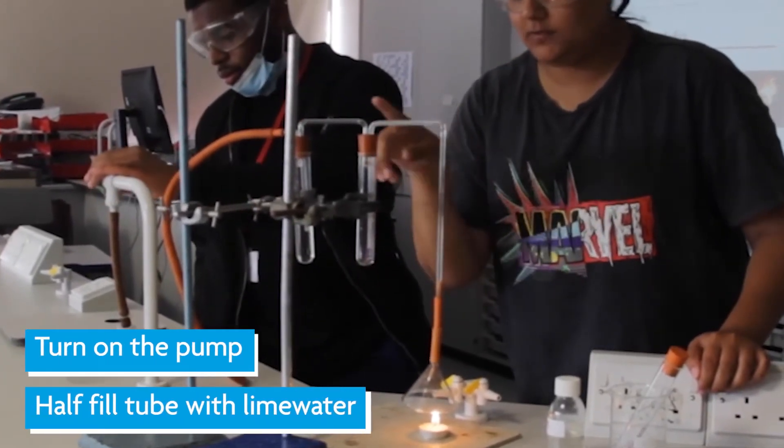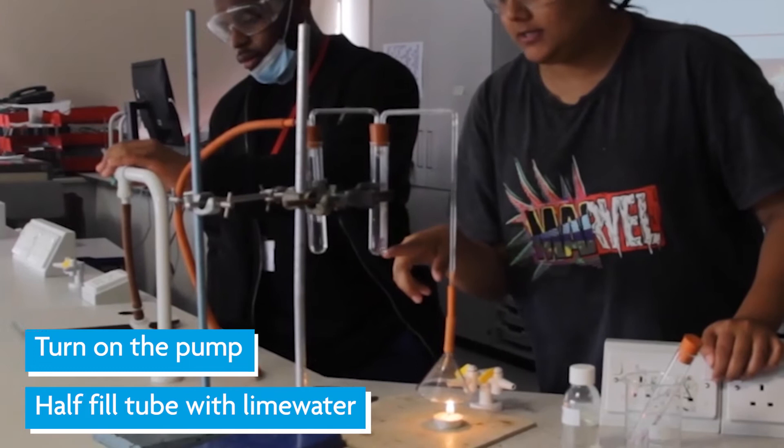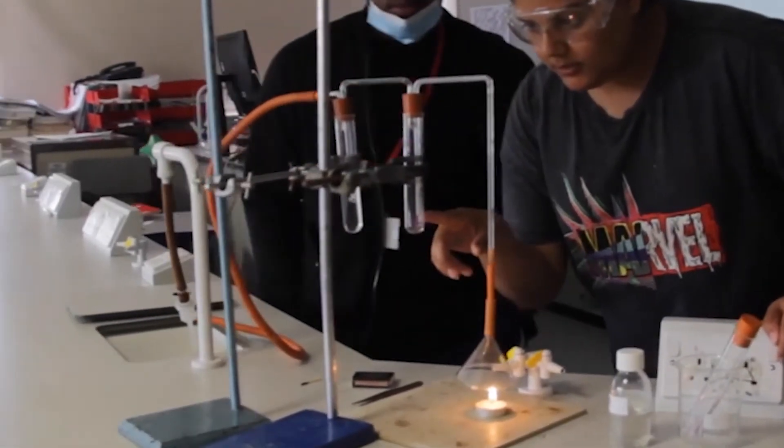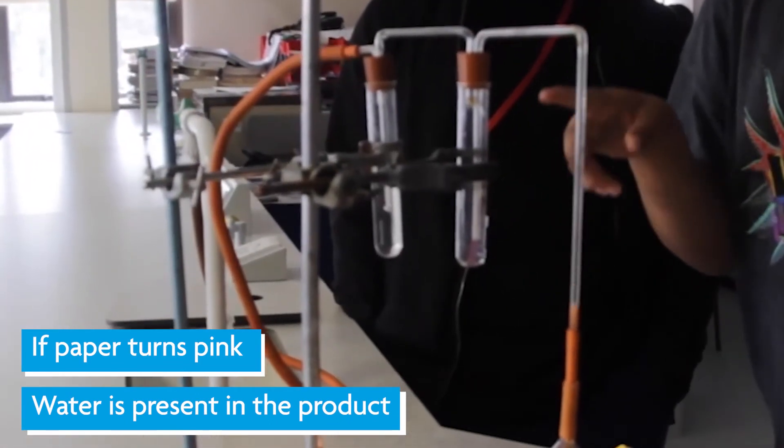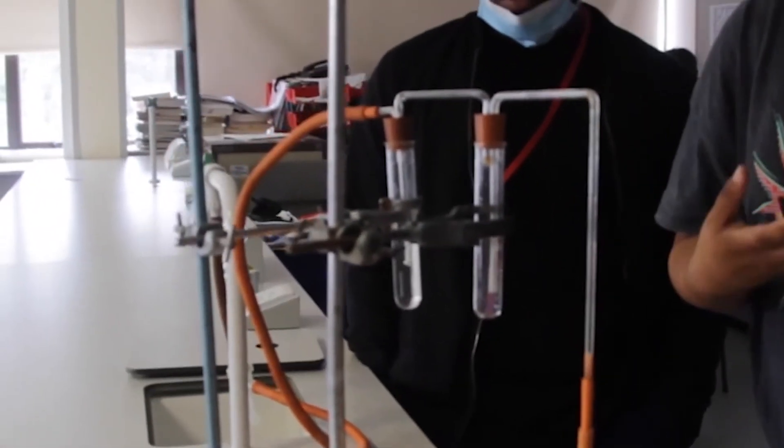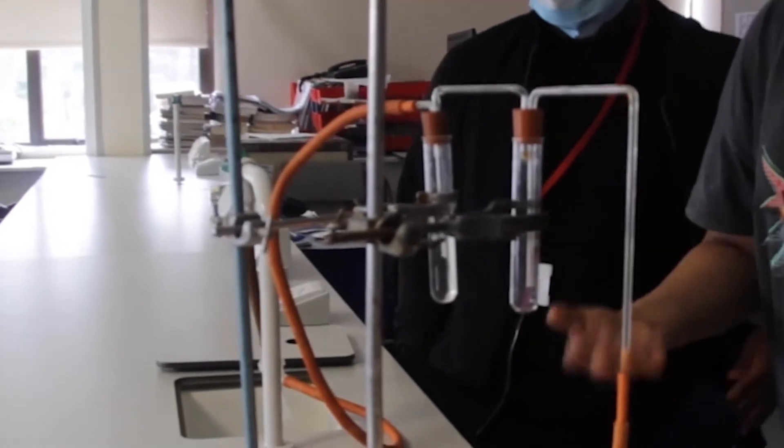When the product is released from the tube and transferred over here, the cobalt chloride will turn pink. As soon as it turns pink, you can tell that there is water present in the product.